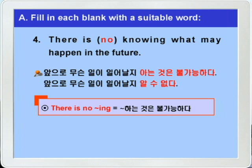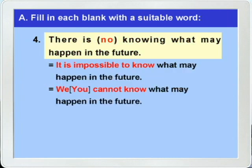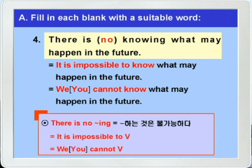정답을 다시 한번 더 확인하고 이 문장을 다른 말로 다시 써보겠습니다. 'There is no knowing what may happen in the future.' 'It is impossible to know what may happen in the future.' 'We cannot know what may happen in the future.' 'You cannot know what may happen in the future.' 이처럼 'there is no -ing'는 'it is impossible to 부정사'나 일반인 주어, 즉 we나 you를 써서 'we cannot 동사원형' 혹은 'you cannot 동사원형' 이렇게 바꿔줄 수가 있습니다.